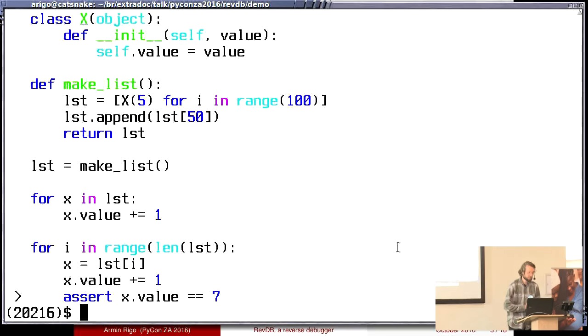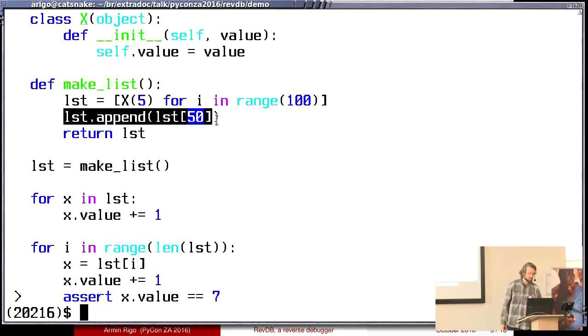Here I have a nice small demo. Let's take a bit of time to make sure everybody follows this code. It makes a list of 100 instances of x with the value 5 in them. Then there is this line that is basically the bug that I want to discover, so let's ignore it for now.